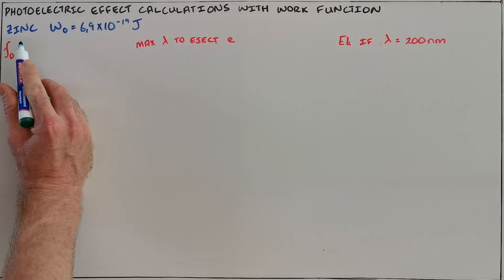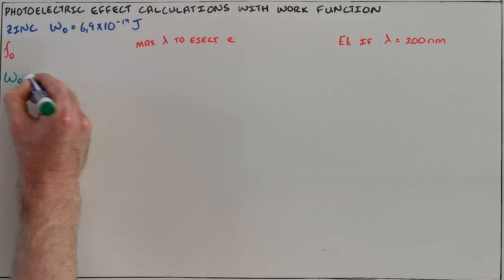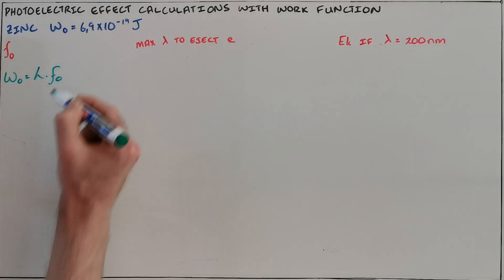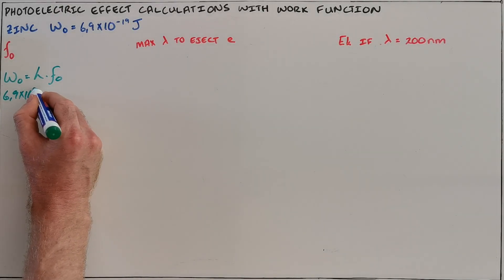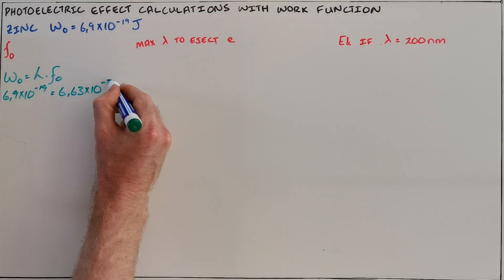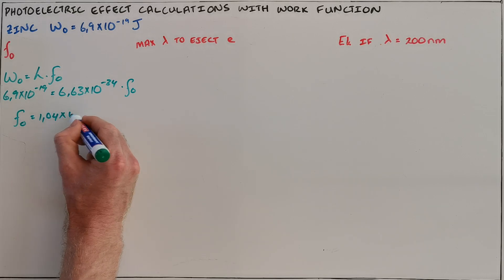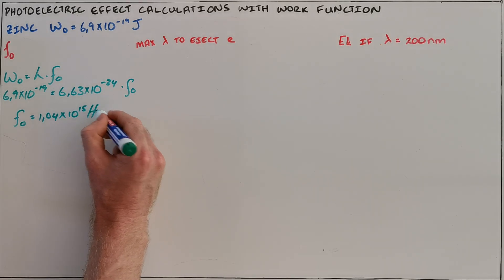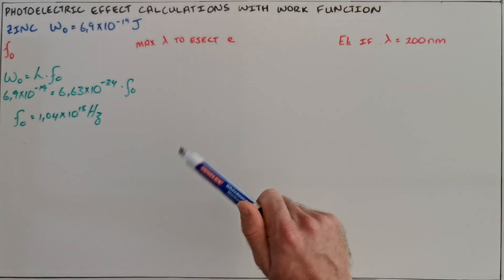The first and most common question here would be to calculate the threshold frequency for that metal. Threshold frequency is the minimum frequency of a photon required to eject an electron, and that is calculated using the formula: work function equals Planck's constant multiplied by threshold frequency. The work function was given as 6.9×10⁻¹⁹, Planck's constant is 6.63×10⁻³⁴, and solving for threshold frequency gives 1.04×10¹⁵ hertz.